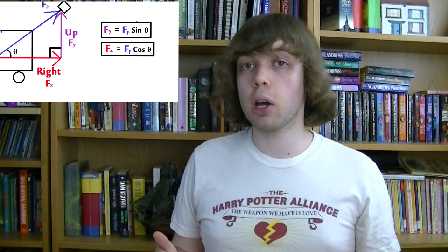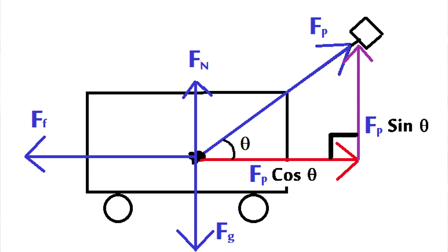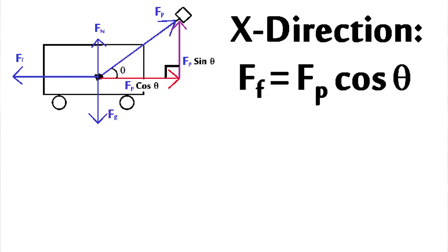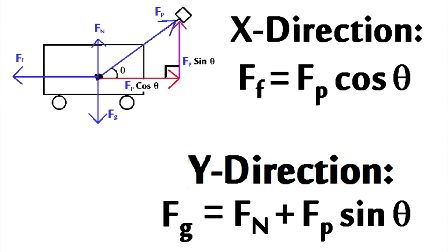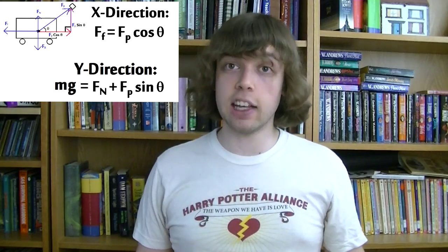So now that we split that force into its X and Y components, we can use those components in our equations. In the X direction, we have the X component of the pulling force pulling to the right, and we have the force of friction pulling to the left. Since the forces are balanced, these have to be equal to each other, so we'll write FF, force of friction, is equal to FP cosine theta. In the Y direction, we have the Y component of the pulling force acting up, and we have the normal force acting up, and then we have the force of gravity acting down. Both of the two forces acting up must together balance the force of gravity acting down. So we can write that FG, the force of gravity, is equal to FN, the normal force, plus FP sine of the angle. That's the upward component of your pulling force. The two upward forces are equal to the one downward force. And lastly, we can replace FG with MG, just like we did last time. And again, if we were given some numbers, we could plug those numbers in and solve the equation to find some missing value in a question.